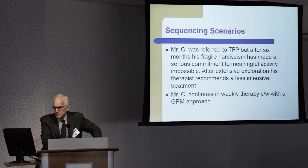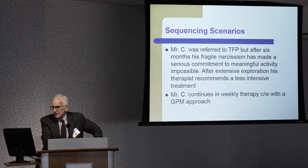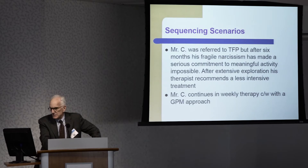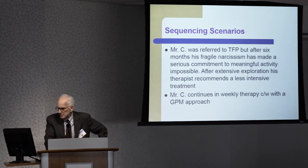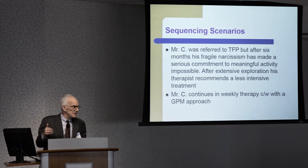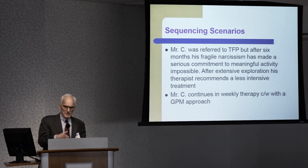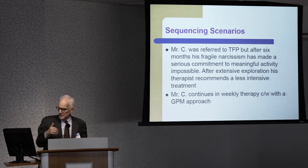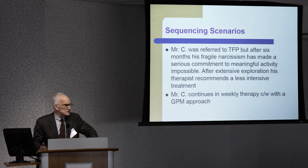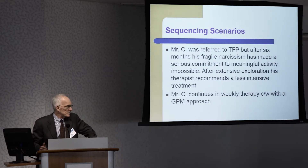Another sequencing scenario would be Mr. C, who's referred to TFP, but after six months his fragile narcissism has made a serious commitment to meaningful activity impossible. After extensive exploration, his therapist recommends a less intensive treatment. In this case, a TFP therapist refers a patient to a less structured treatment with different goals. Mr. C continues in a weekly therapy more consistent with a GPM approach.